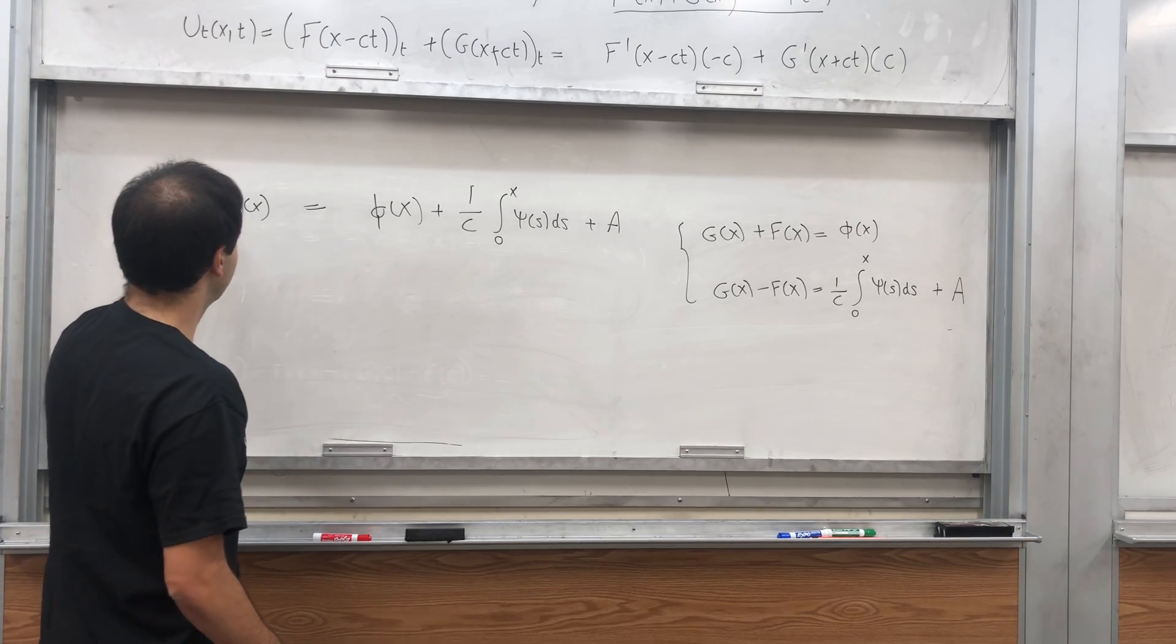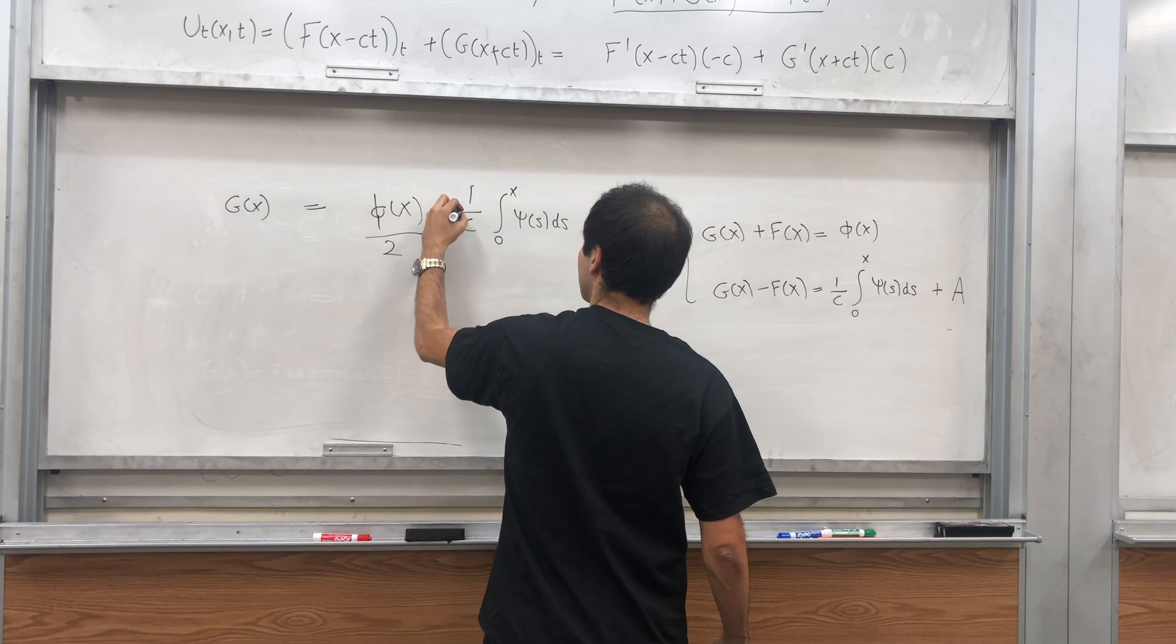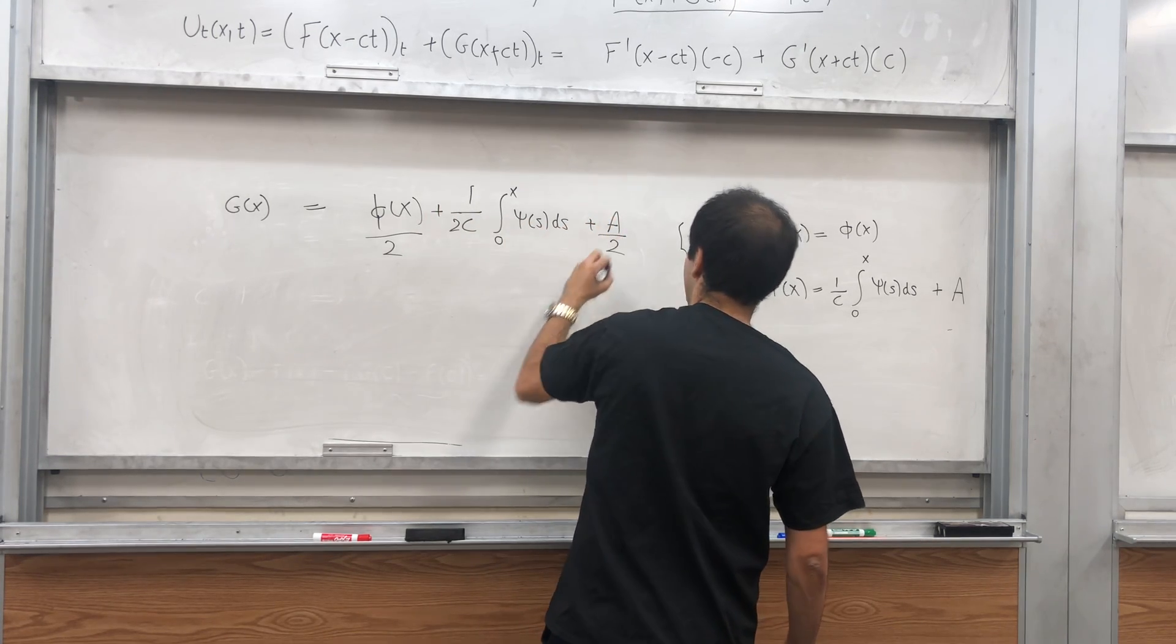So in other words, G of x, that becomes phi of x over two, one over C over two, so one over two C, and A over two.